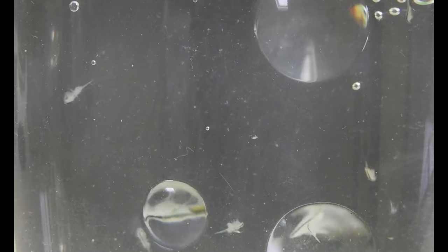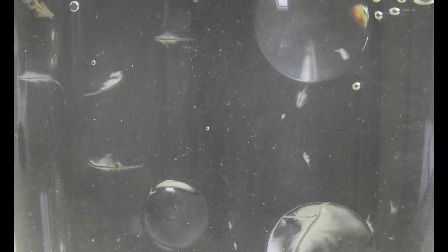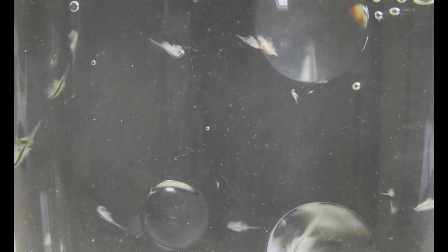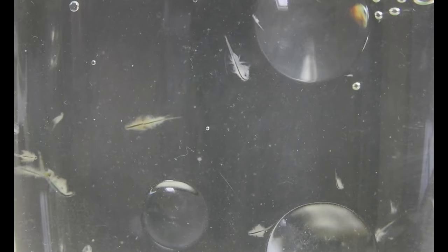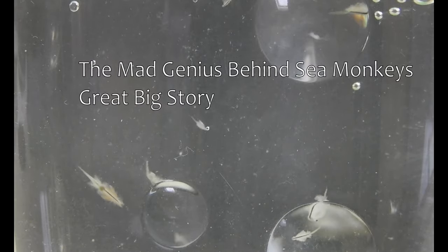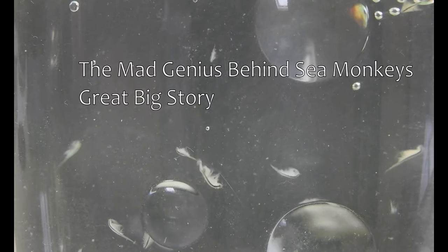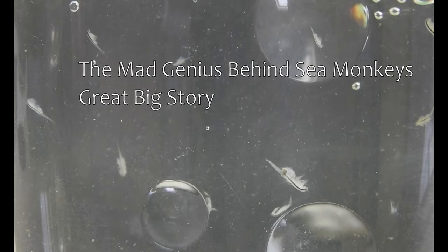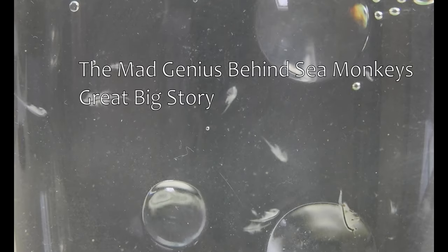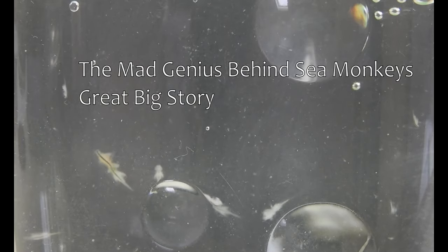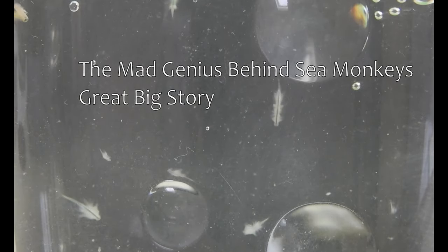There's also the thing about the water purifier that actually already contains eggs while the accession adds some dye that makes the already hatched baby brine shrimp suddenly more visible. The background story about the inventor is fascinating. The video by Great Big Story did a much better job at that than I ever could. Check it out, it's linked in the description.